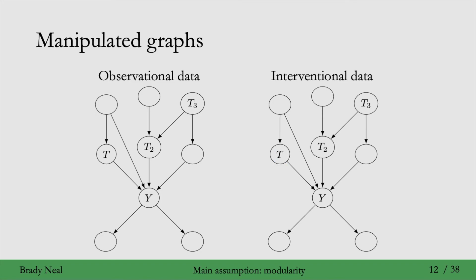For one more example of an interventional distribution for this observational data, consider that we intervene on the variable t2. To get the manipulated graph for this interventional distribution, we just delete the edges going into t2. And the only factor that changes is the factor for t2; all other factors remain exactly the same as they were for the observational data.